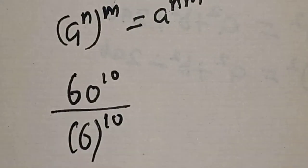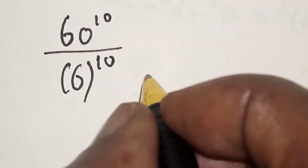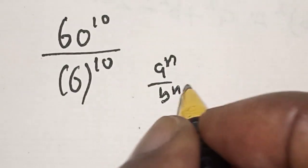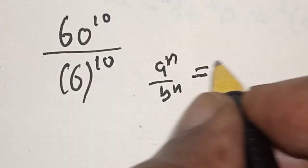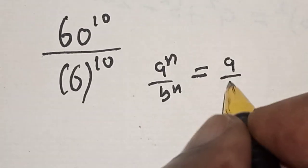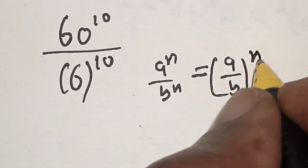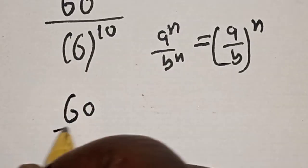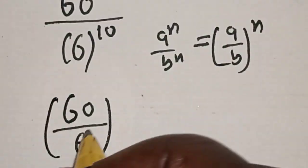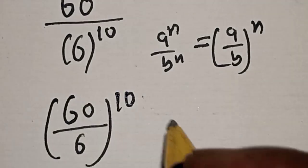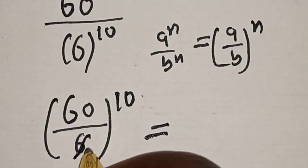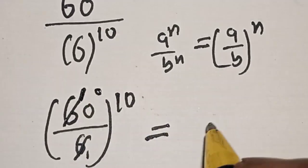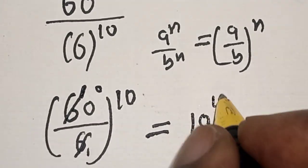Now, if you have a raised to power n divided by b raised to power n, this is equal to a divided by b, raised to power n. So we have 60 divided by 6, raised to power 10. This equals 10 raised to power 10.